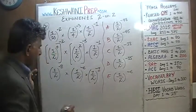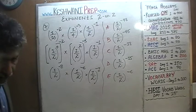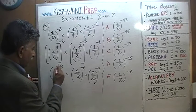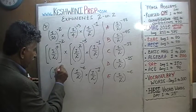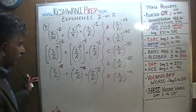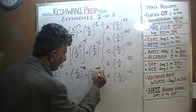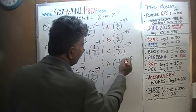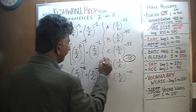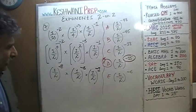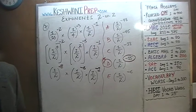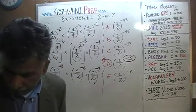And finally, (1/2) raised to negative 1. Now all we have to do is add the exponents, because they all have the same base. We have negative 8 plus negative 6 equals negative 14, and negative 14 plus negative 1 is negative 15. The answer is D: (1/2) raised to negative 15.